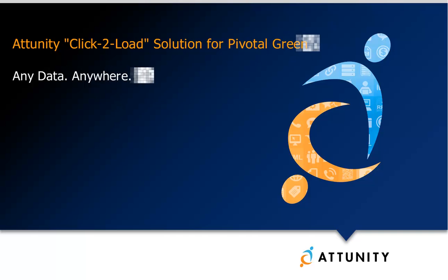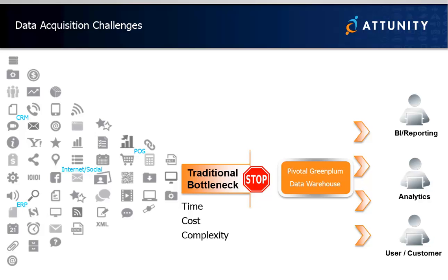A respected leader in data warehousing, Pivotal Greenplum helps many organizations gain a competitive edge in an increasingly data-driven world. However, to reap the benefits of Pivotal Greenplum's parallel computing architecture, customers need to load vast quantities of information — some in real-time and often from a wide variety of sources. Today, many customers invest a great deal of time, resources, and money using traditional scripting or ETL approaches for loading their data, even though the majority of data being loaded does not require complex transformations and can be loaded automatically.